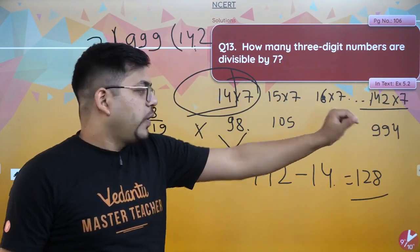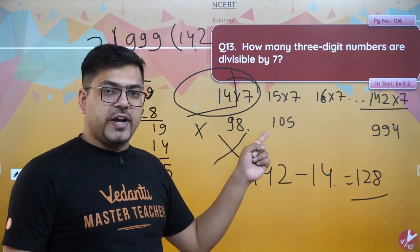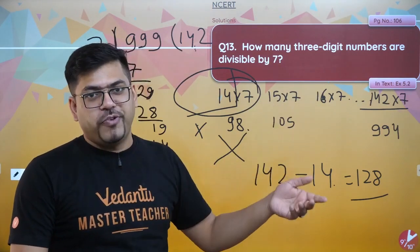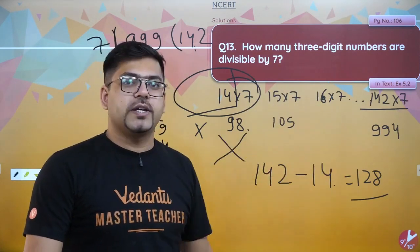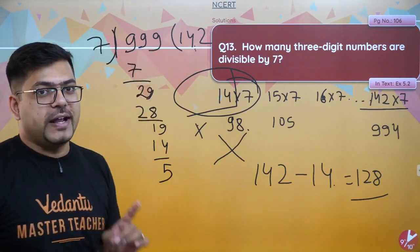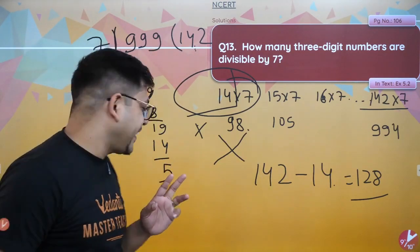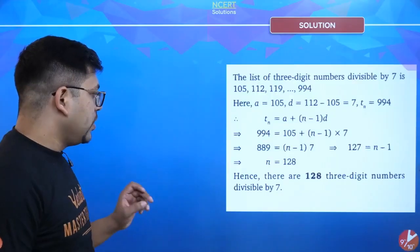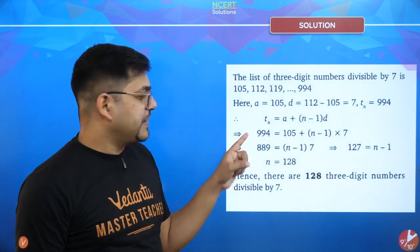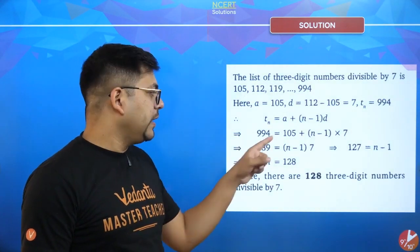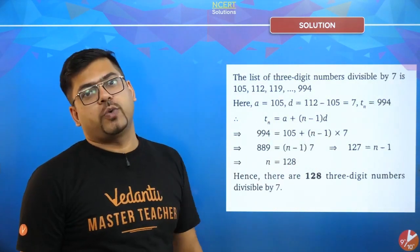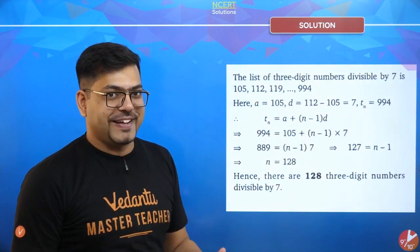Using the AP approach: a = 105, d = 7. Put the values in the last term formula and solve — n ki value 128 hi aayegi. Wahaan se bhi n ki value 128 hi ae. Try karo, sahi answer aayega. So n equals 128. Using the AP method: 994 = 105 + (n−1)×7, solve kiya to n ki value 128. Thik hai, samajh gaye.